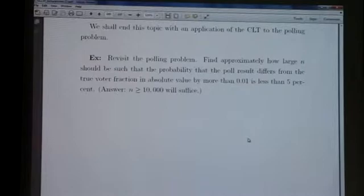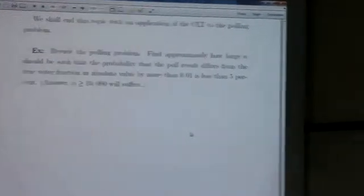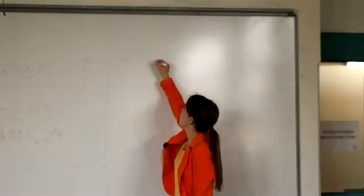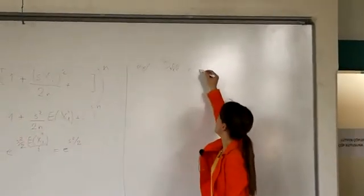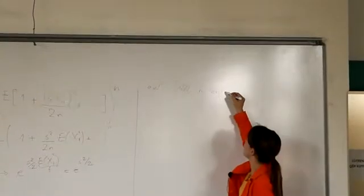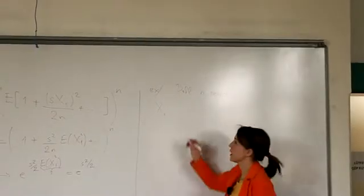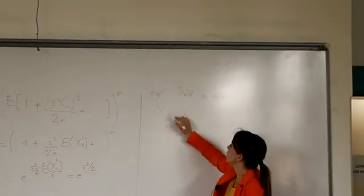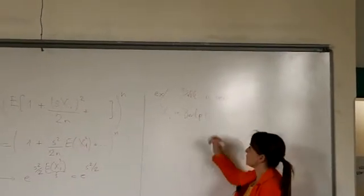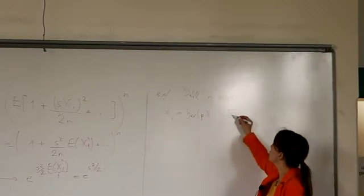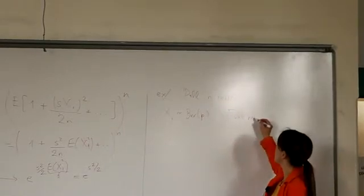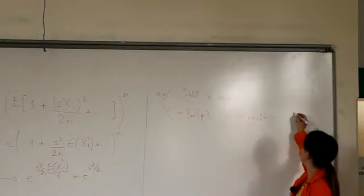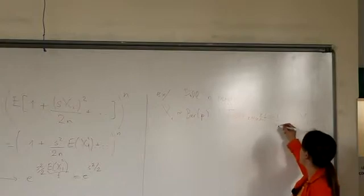Let's translate that into a mathematical formulation. Poll N people. Person i has opinion Xi. Xi is Bernoulli with parameter p. And the poll result is summation Xi divided by n, i from 1 to n.